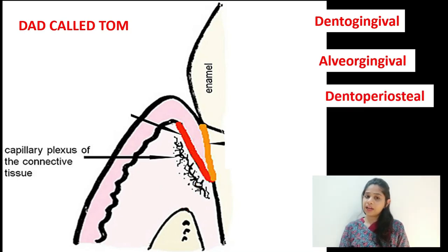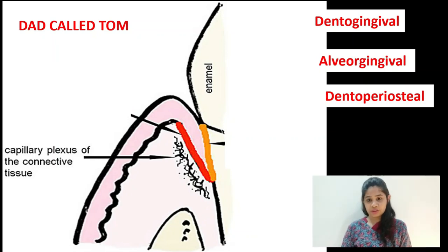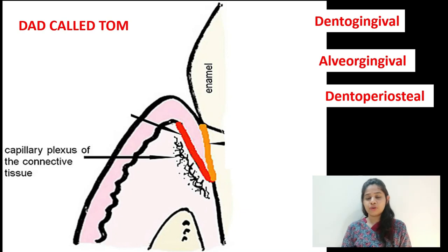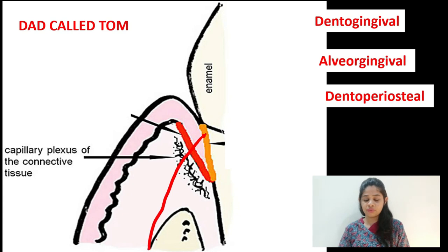The next subgroup is the dento periosteal fiber group. These arise from the cementum near the CEJ and get inserted into the periosteum of the alveolar bone, running in an apical direction.